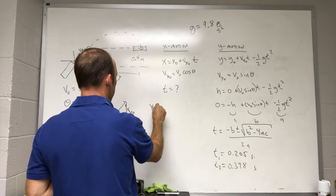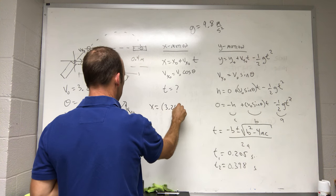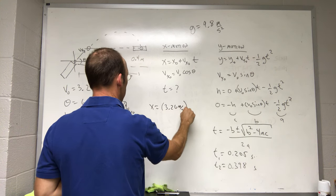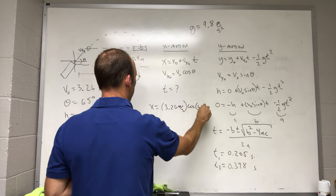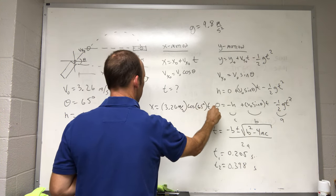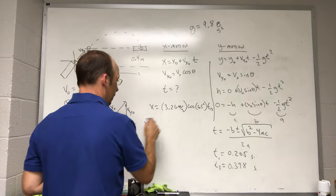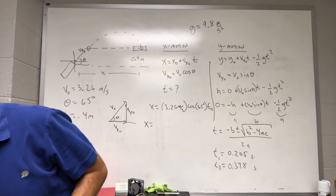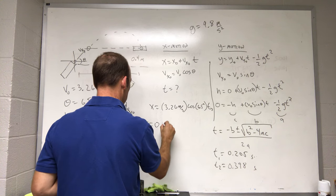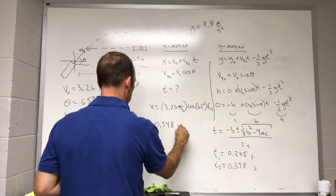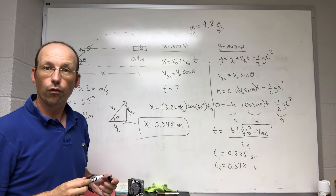So I'm going to use this time. I'm going to plug it into this equation. So x equals v0, 3.26 meters per second, times the cosine of 65 degrees, times t2 of 0.398. And if I do that, I get x equals 0.548 meters.